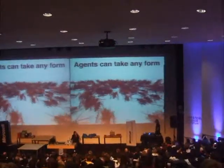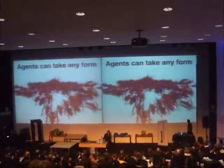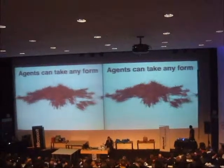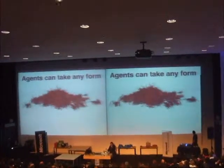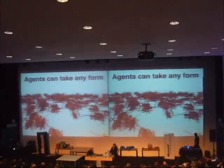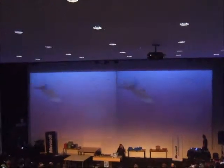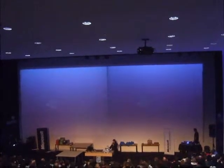Agents can take any form. This is very unique — we have what we call an arbitrary skeleton. You can make cockroaches, you can make fish, you can make birds, planes, trains, and automobiles. Basically anything that moves on earth can be animated with Massive.